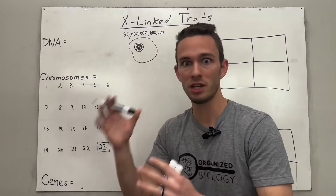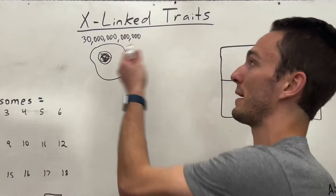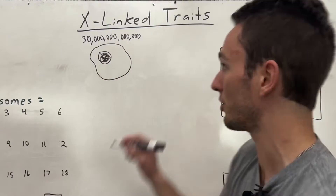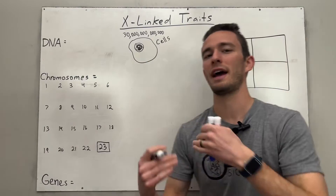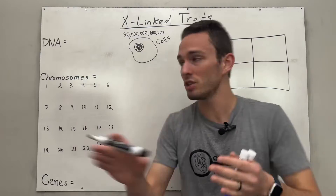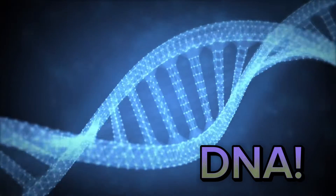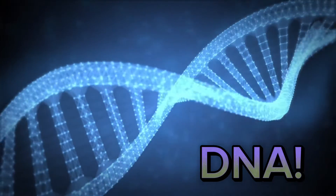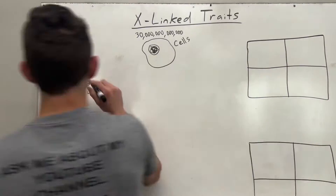Whatever these cells are made of become your traits, because you are quite literally made of these cells. The cells need some instructions on how to build themselves, and that comes in the form of DNA. Think of DNA as basically the recipe book for your cells.